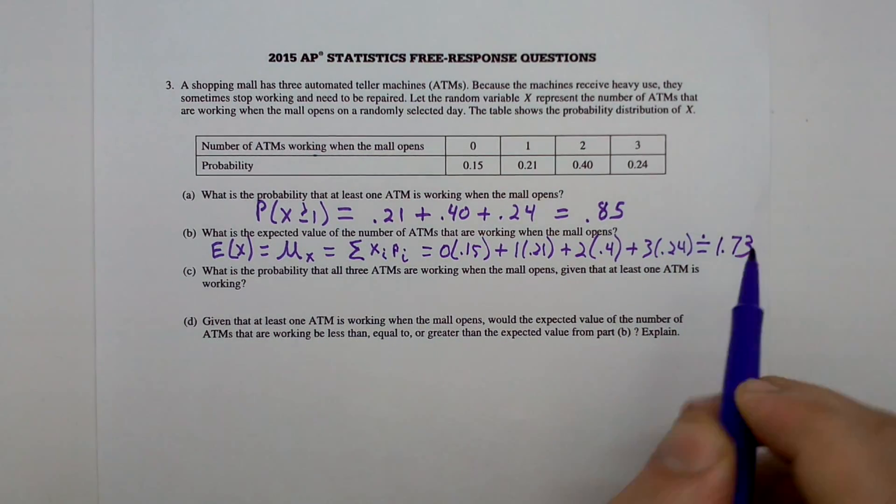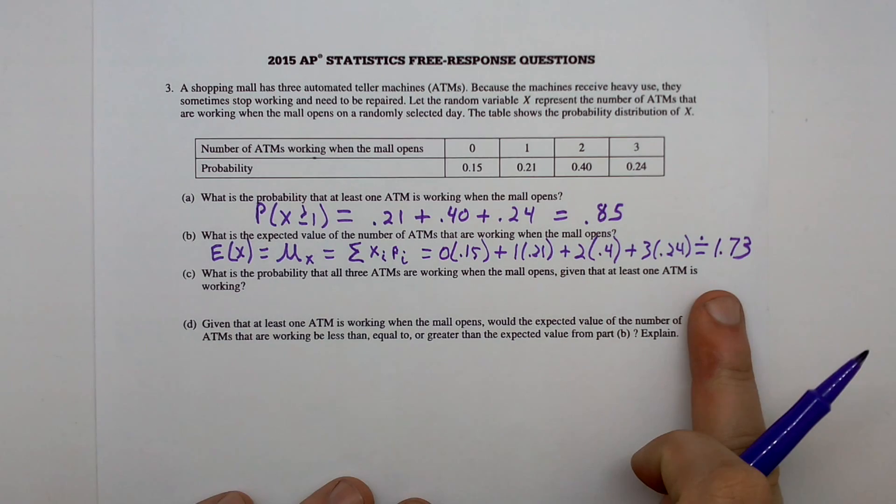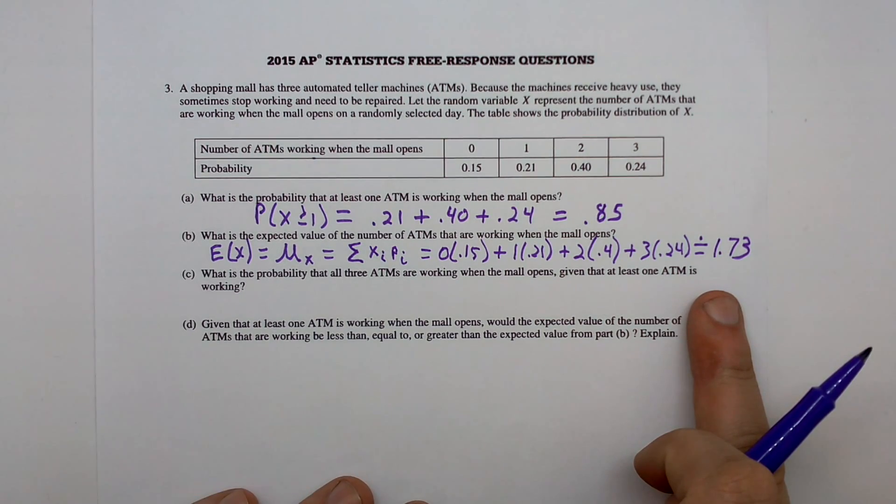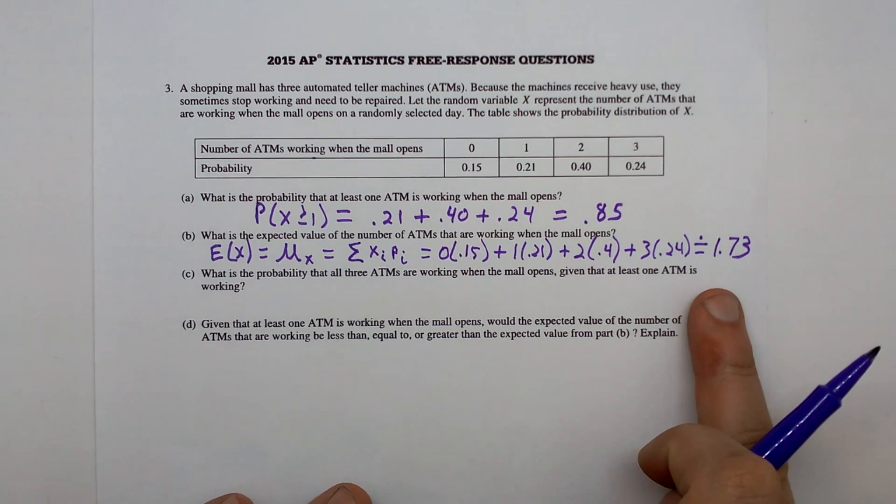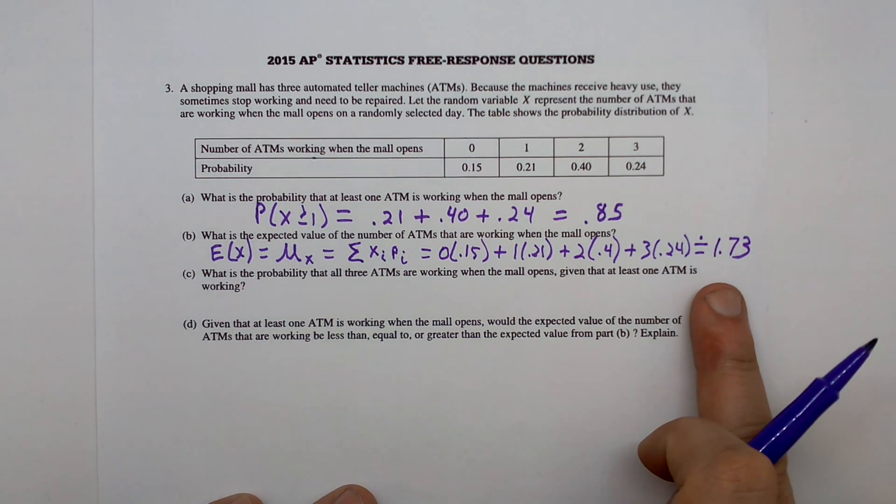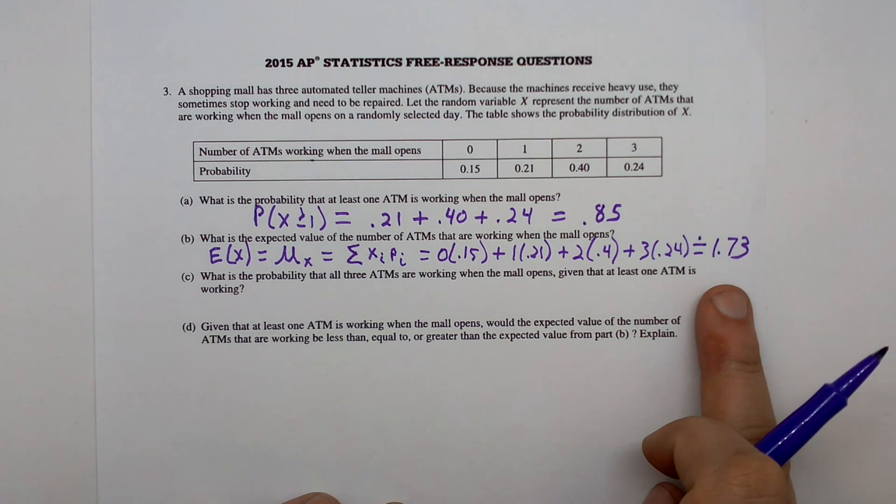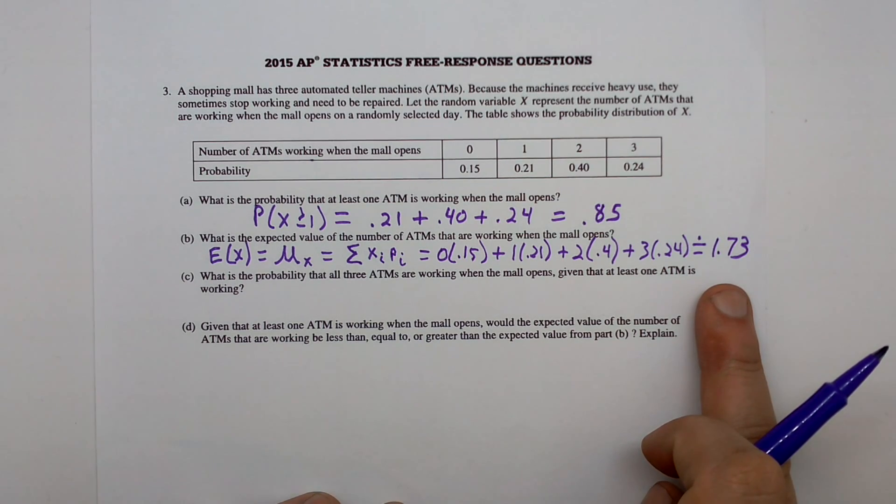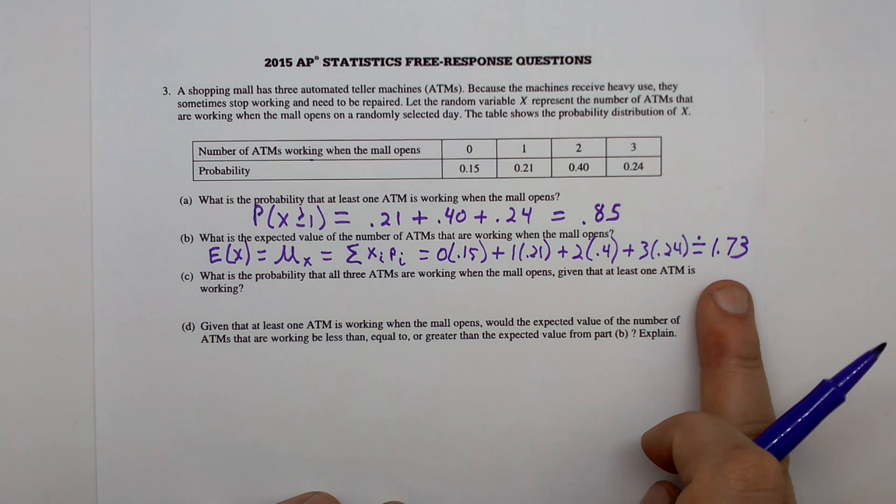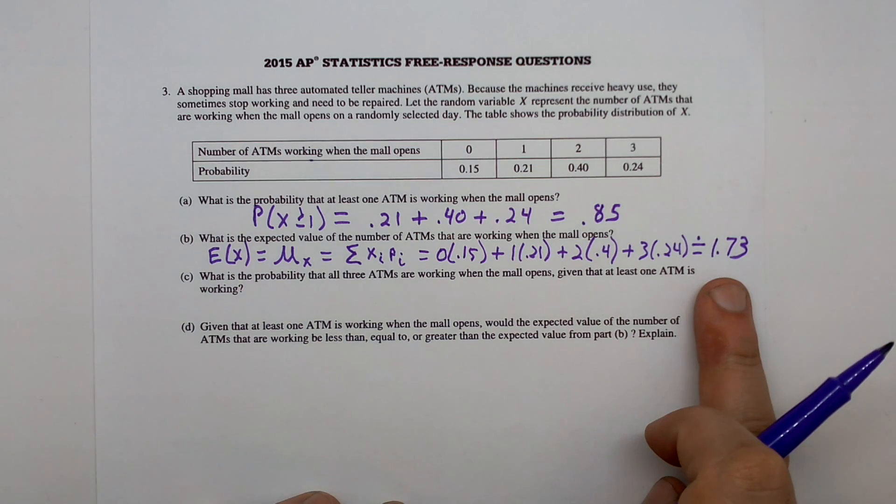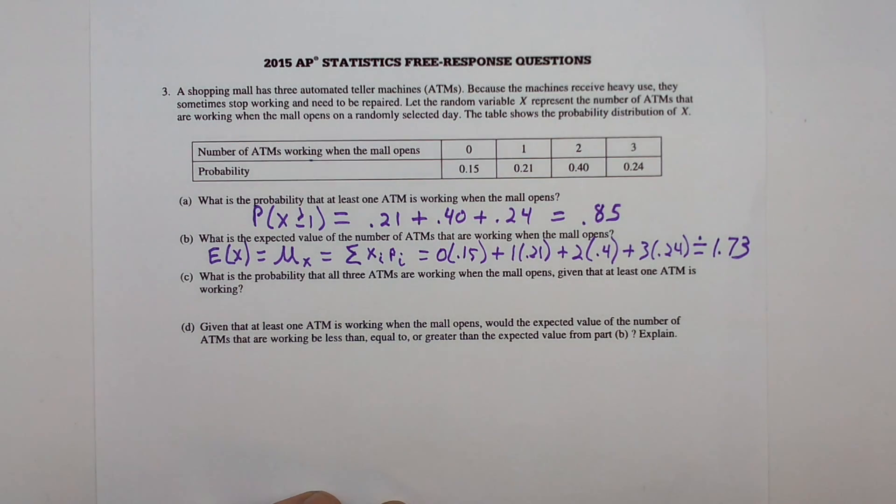What is this 1.73? It is the long run average. That is, if we went in there to the mall a million times and added up the number of ATMs and divided by a million, it would approach 1.73. There will never be a time that 1.73 ATMs are open because clearly the number of ATMs will be an integer value, but our expected value can indeed be, and oftentimes is, a decimal.